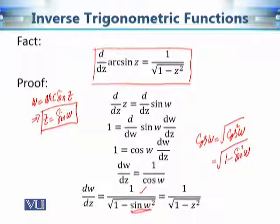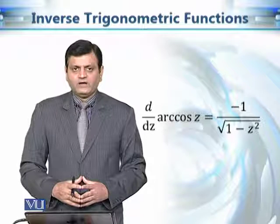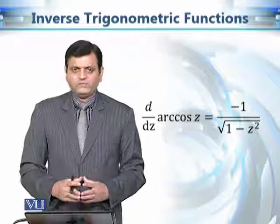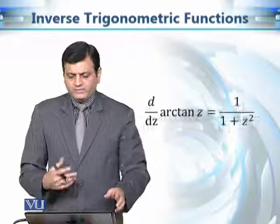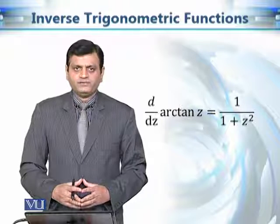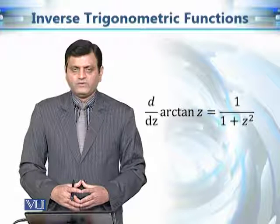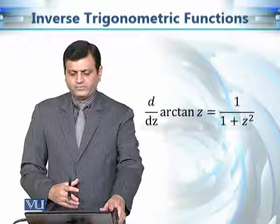Similarly, we can prove that the derivative of arc cosine z is equal to minus 1 over the square root of 1 minus z squared, and that the derivative of arc tan z is equal to 1 over 1 plus z squared.